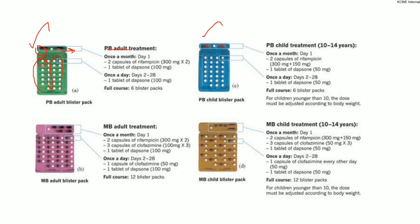On Day 1, we are going to give 600 mg of Rifampicin, taken as two capsules of 300 mg each. In the white tablet, as mentioned, it is Dapsone at a dosage of 100 mg. From Day 2 onwards, we are going to have Dapsone for 28 days.